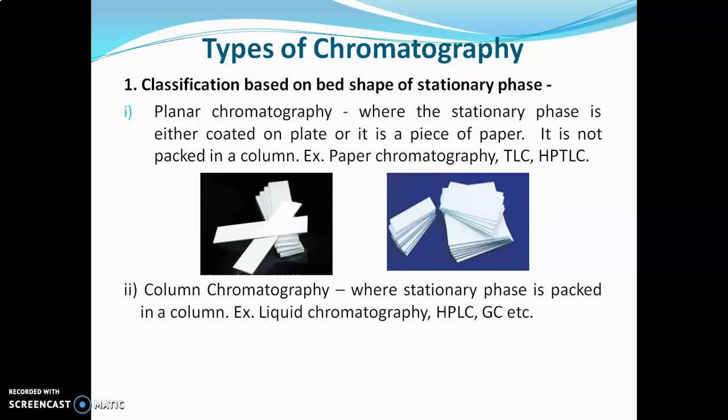The second type is column chromatography, where the stationary phase is packed in a column. Examples include liquid chromatography, HPLC, GC, etc. These are some columns used in HPLC — in such stainless steel columns the stationary phase is packed. The columns of GC and liquid chromatography are different.